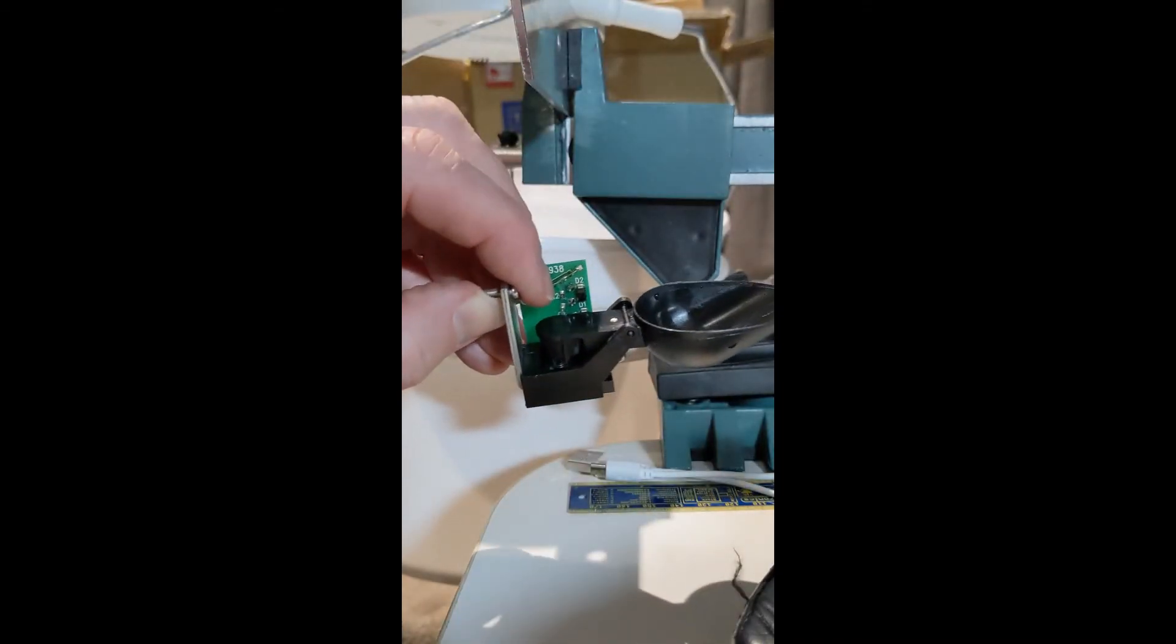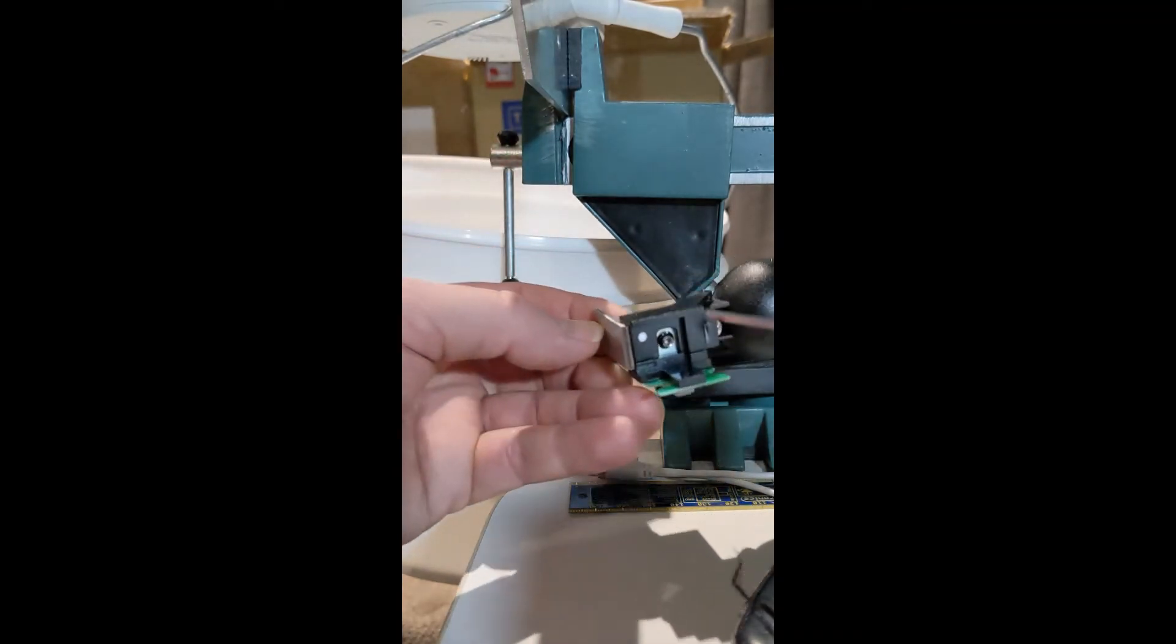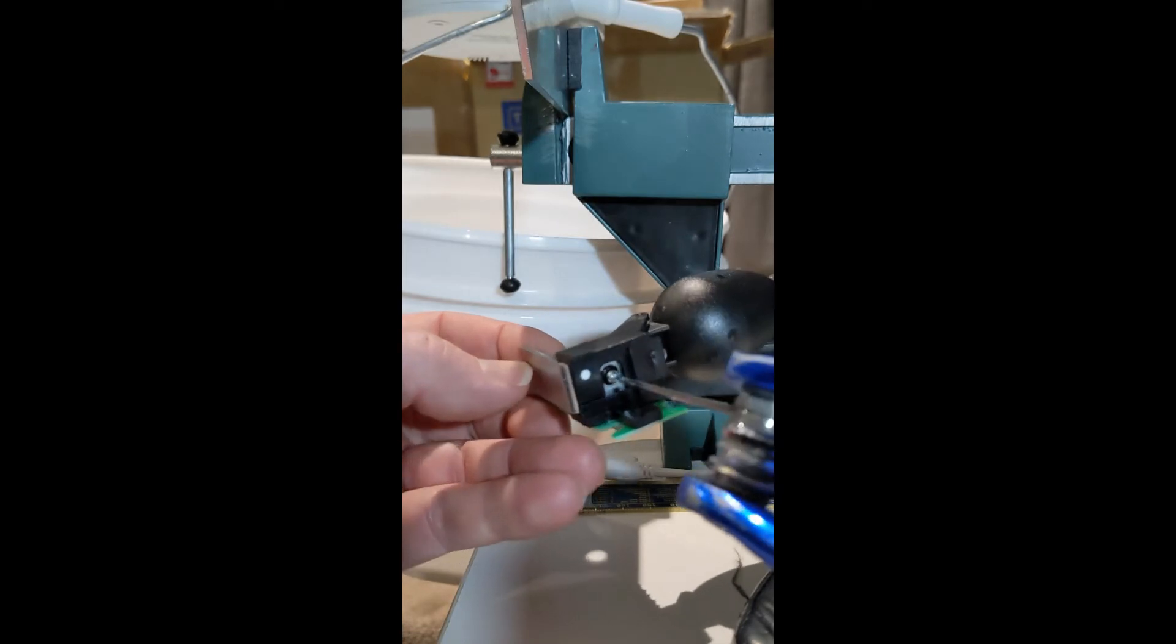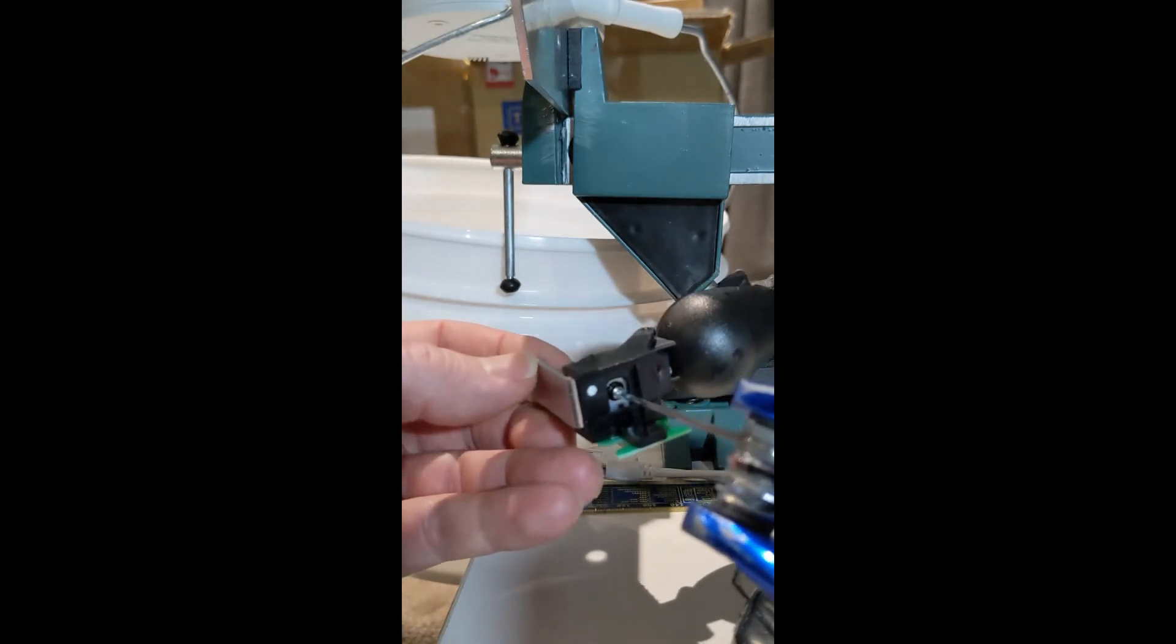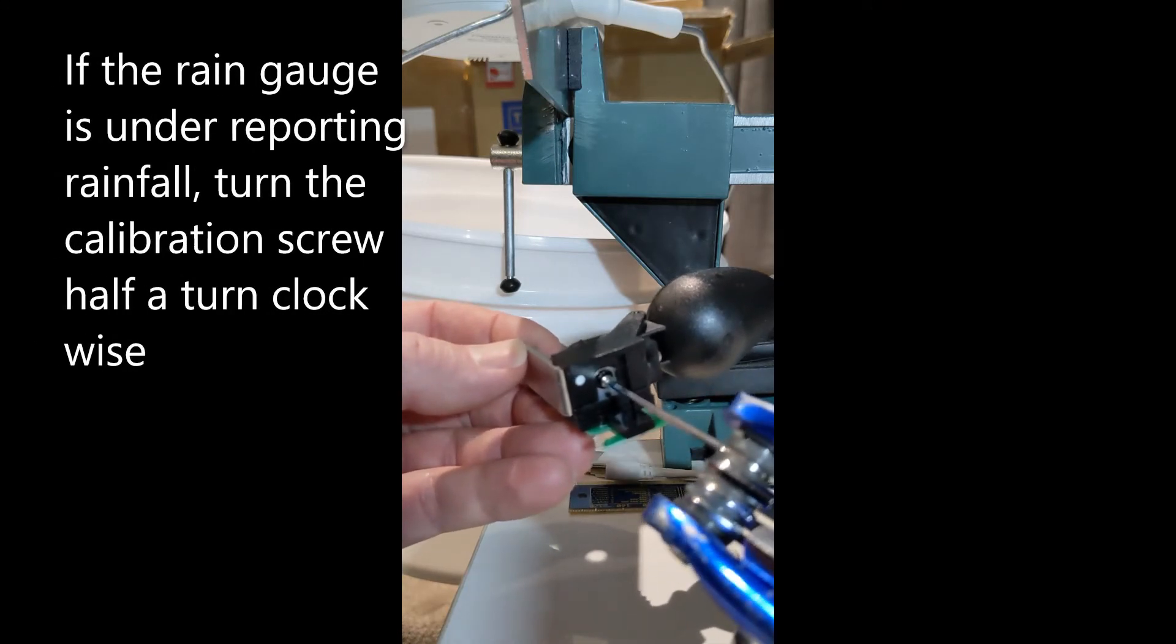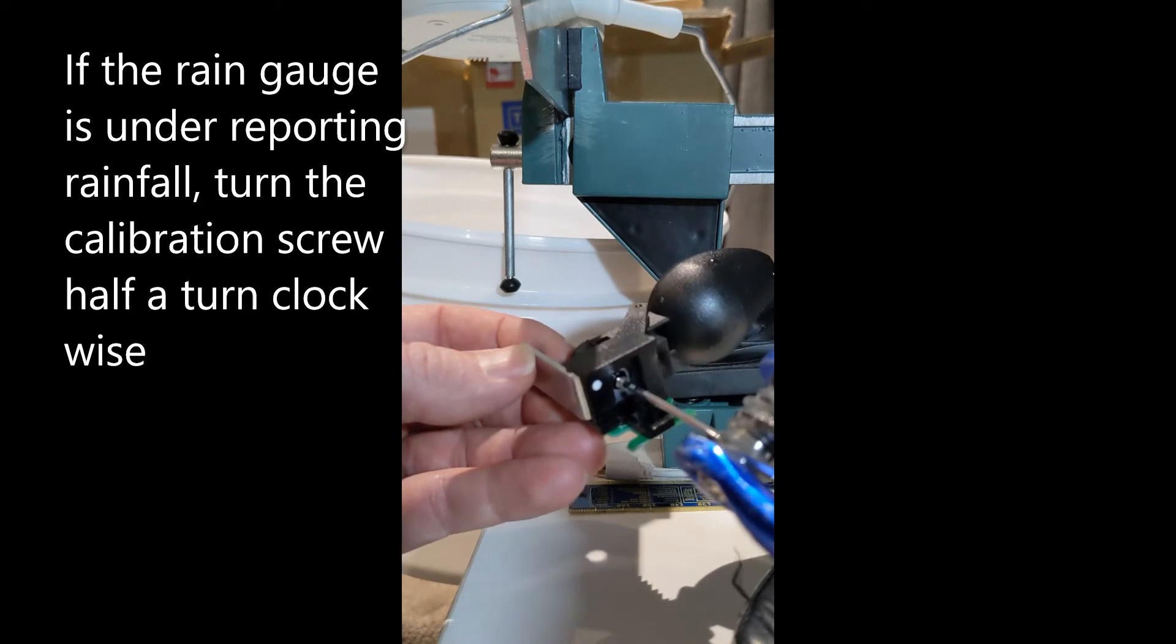To calibrate the tipping gauge, you remove it from the gauge and flip it upside down. Underneath, there's a little allen key adjustment screw. Now, if it's under-measuring the rainfall, you want to turn this adjustment screw half a turn clockwise.